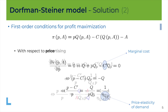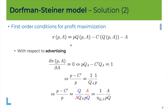Now let's look at the second first-order condition — the one with respect to advertising. Advertising has three effects: a direct effect on the quantity sold, since more advertising increases quantity demanded. So if the monopolist decides to spend more on advertising, it increases revenue, it increases cost because there is more to produce, and it increases advertising spending itself. Taking the derivative with respect to A: Q_A — the first-order derivative of quantity demanded with respect to advertising — represents the marginal revenue of increasing advertising; C' times Q_A is the marginal cost of producing more goods due to higher demand; and 1 is the derivative of A, representing the marginal spending on advertising.